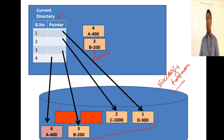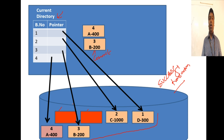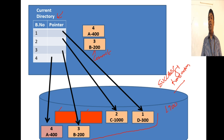Let's verify we achieved consistency. Before the transaction, the total amount across all blocks was 500 + 100 + 1000 + 300 = 1900. After the transaction completed: 400 + 200 + 1000 + 300 = 1900. We have achieved a stable consistent state.